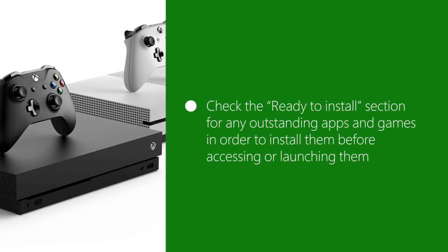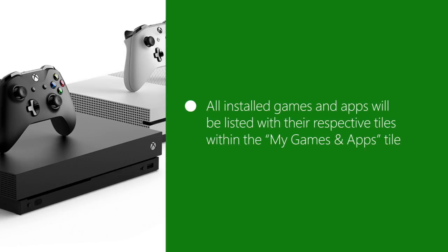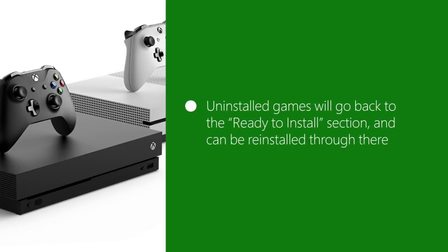Here are some key points of how downloads work for the Xbox One console. Check the Ready to Install section for any outstanding apps and games in order to install them before accessing or launching them. All installed games and apps will be listed with their respective tiles within the My Games and Apps tile. Uninstalled games will go back to the Ready to Install section and can be reinstalled from there.